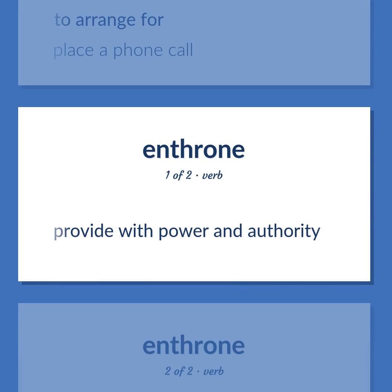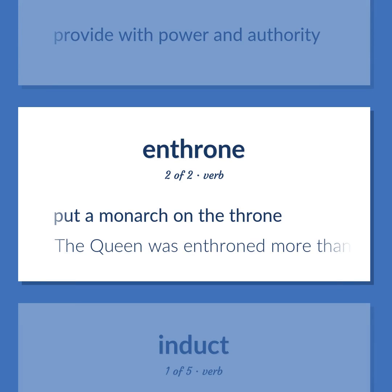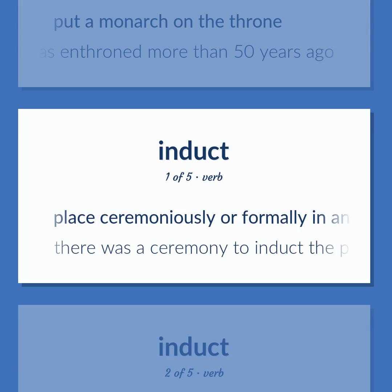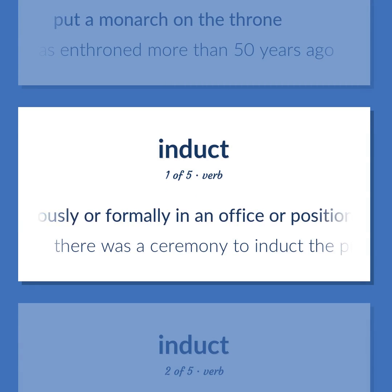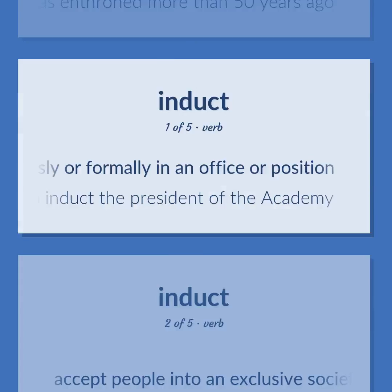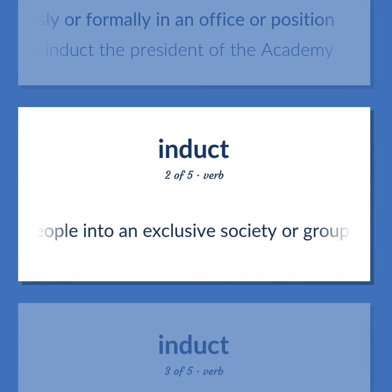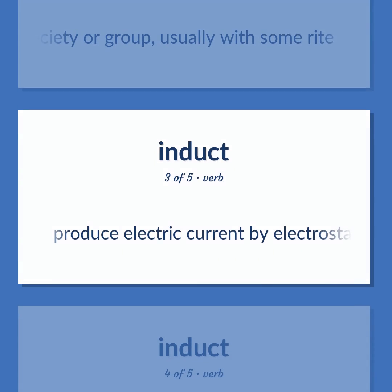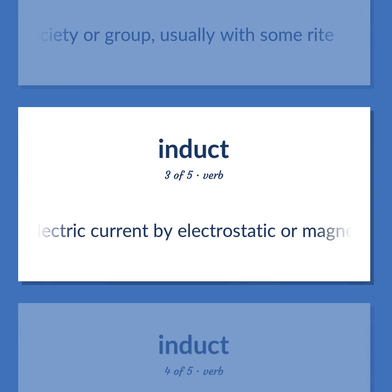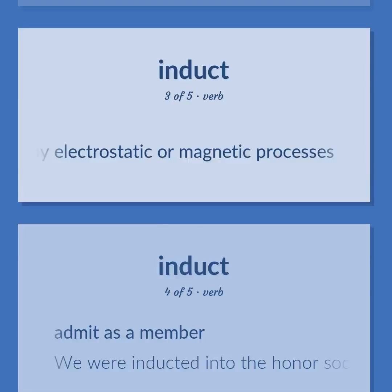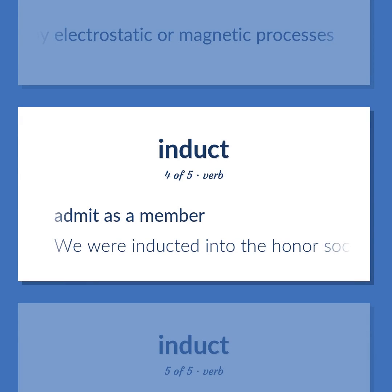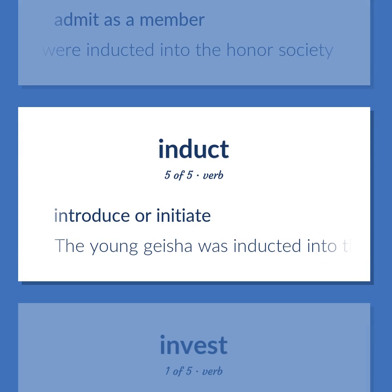Enthrone / Induct: Provide with power and authority. Put a monarch on the throne — the queen was enthroned more than 50 years ago. Place ceremoniously or formally in an office or position — there was a ceremony to induct the president of the academy. Accept people into an exclusive society or group, usually with some rite. Produce electric current by electrostatic or magnetic processes. Admit as a member — we were inducted into the honor society. Introduce or initiate — the young geisha was inducted into the ways of her profession.